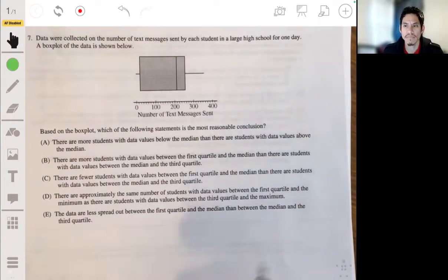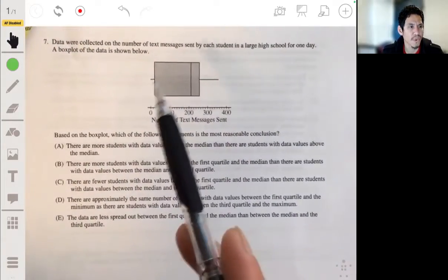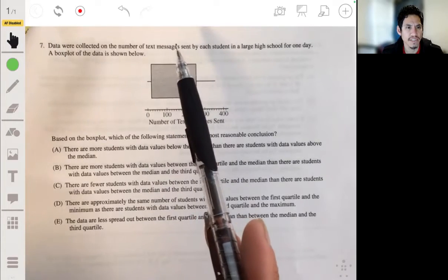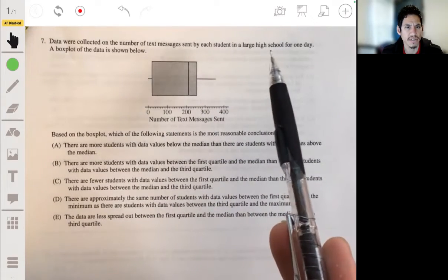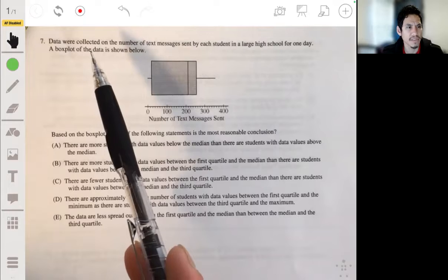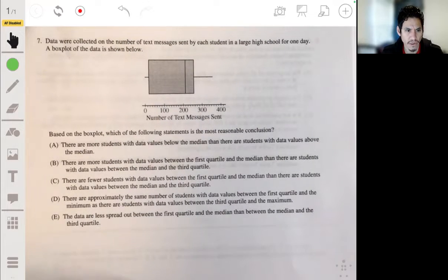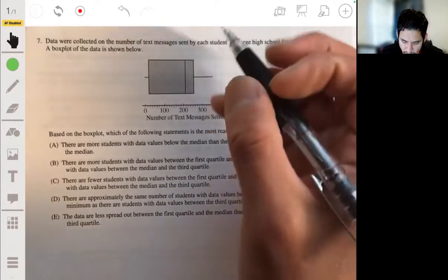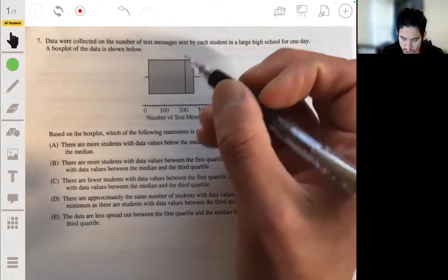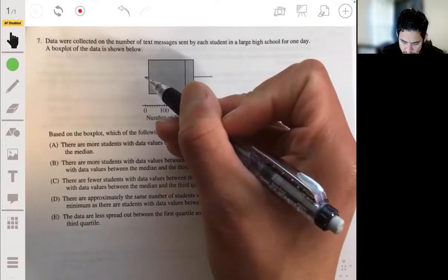Okay, alright. Problem seven. Data were collected on the number of text messages sent by each student in a large high school for one day. The box plot of the data is shown below.